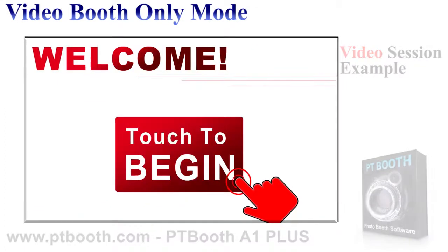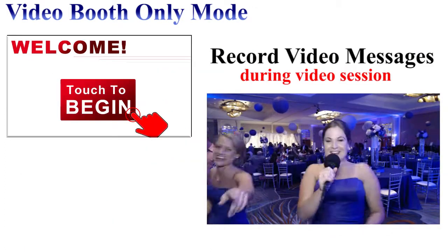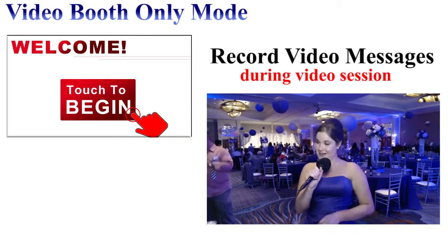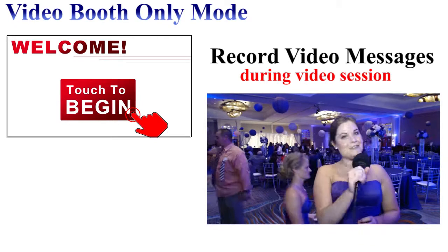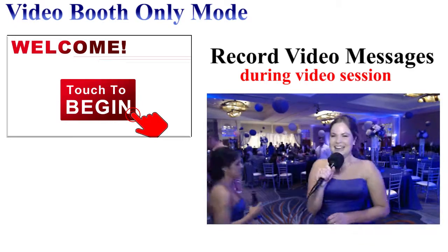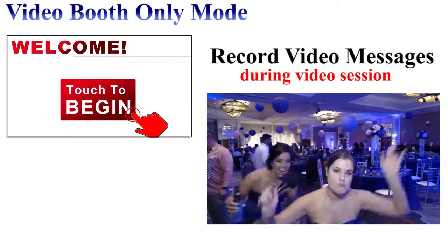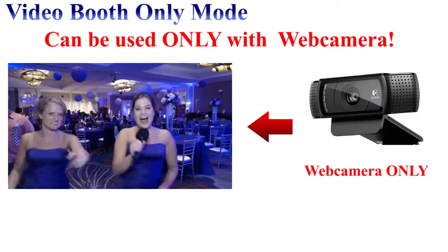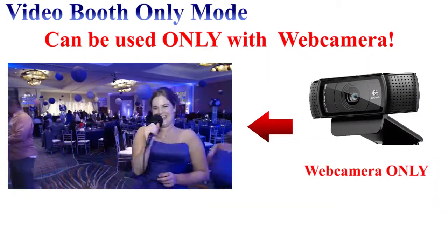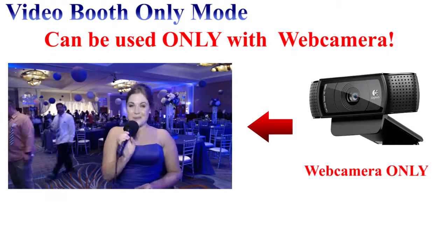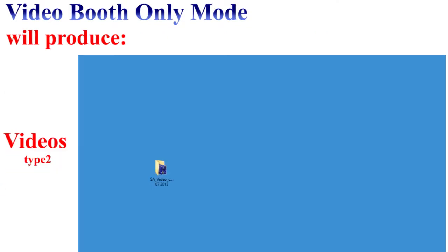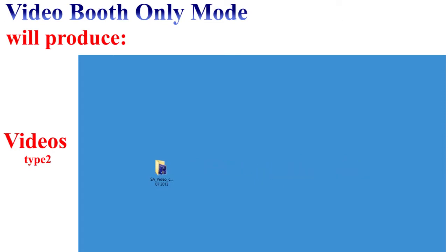The third is video booth only mode. This mode will enable individual video message recordings. It's important to note that a web camera is required to record video — no photos will be taken or printed in this mode. With video booth only mode, PT Booth A1 Plus will produce a folder with all video recordings during each video session.